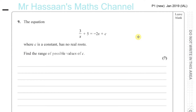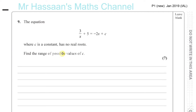Now we have question number 9 from P1, January 2019, International A-Level. The equation 3 over x plus 5 equals minus 2x plus c, where c is a constant, has no real roots. Find the range of possible values of c.